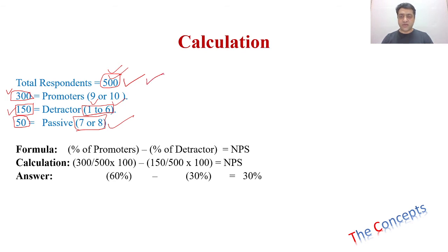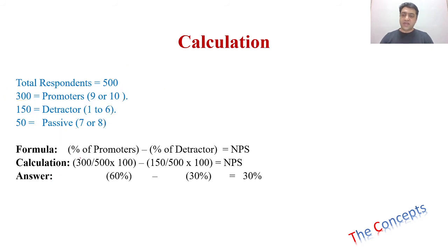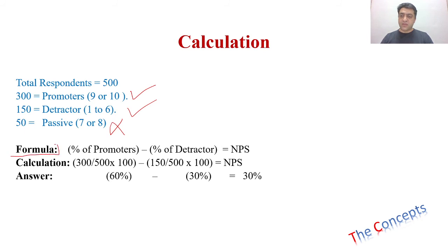You need to know how many people you collected data from, how many answered 9 or 10 (promoters), how many answered 1 to 6 (detractors), and how many answered 7 or 8 (passives). One important thing: in the calculation we include promoters and detractors, but we do not include passives. The formula is: percentage of promoters minus percentage of detractors equals net promoter score.